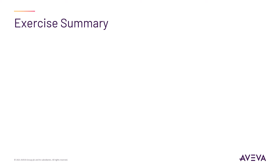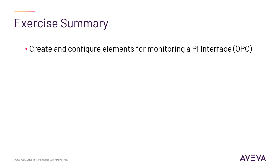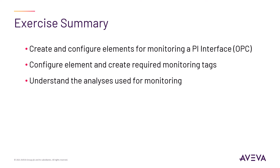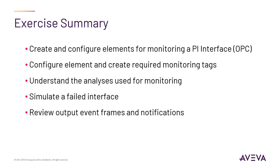In this exercise, you will create the elements necessary for PI OPC interface monitoring, including monitoring of the PI IN-01 server. After reviewing what configuration data is required for the elements to function, you will locate the required data and configure the elements appropriately. You will review the analyses and determine how they are used for monitoring, and what triggers them. You will simulate a failed interface service by triggering analyses to produce event frames and notifications, and review these outputs.